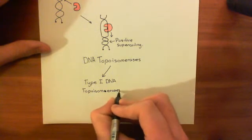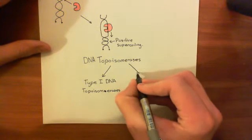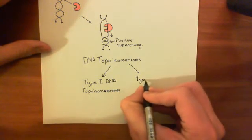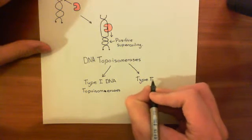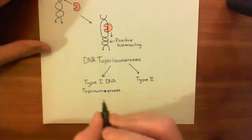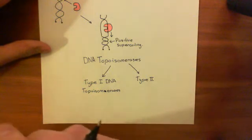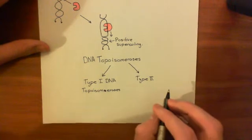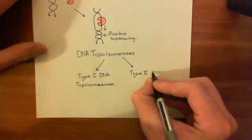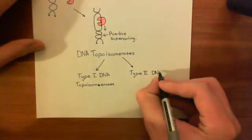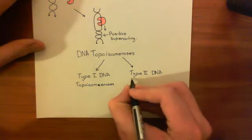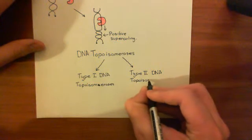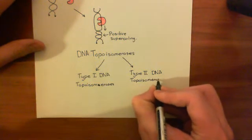And I want to stress that these type 1 DNA topoisomerases and these type 2 DNA topoisomerases are not an individual enzyme. It is a whole family of enzymes. So there are loads of enzymes which are all type 1 DNA topoisomerases, and similarly there are loads of enzymes which are type 2 DNA topoisomerases.